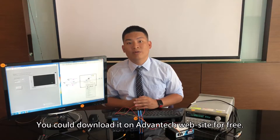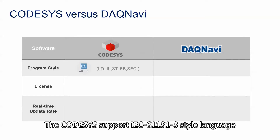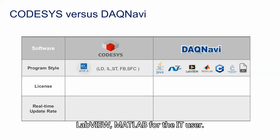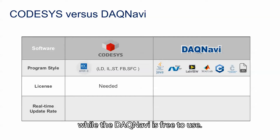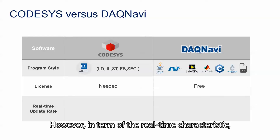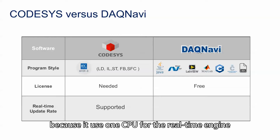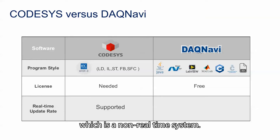You can download it on the Advantech website for free. Here is a comparison table between CODESYS and Deknavi. CODESYS supports IEC 61131-3 style languages, while Deknavi supports Java, .NET, C, C++, LabVIEW, and MATLAB for IT users. Secondly, CODESYS requires a license fee while Deknavi is free to use. However, in terms of real-time characteristics, CODESYS supports real-time control because it uses one CPU for the real-time engine, while Deknavi's API runs on Windows, which is a non-real-time system.